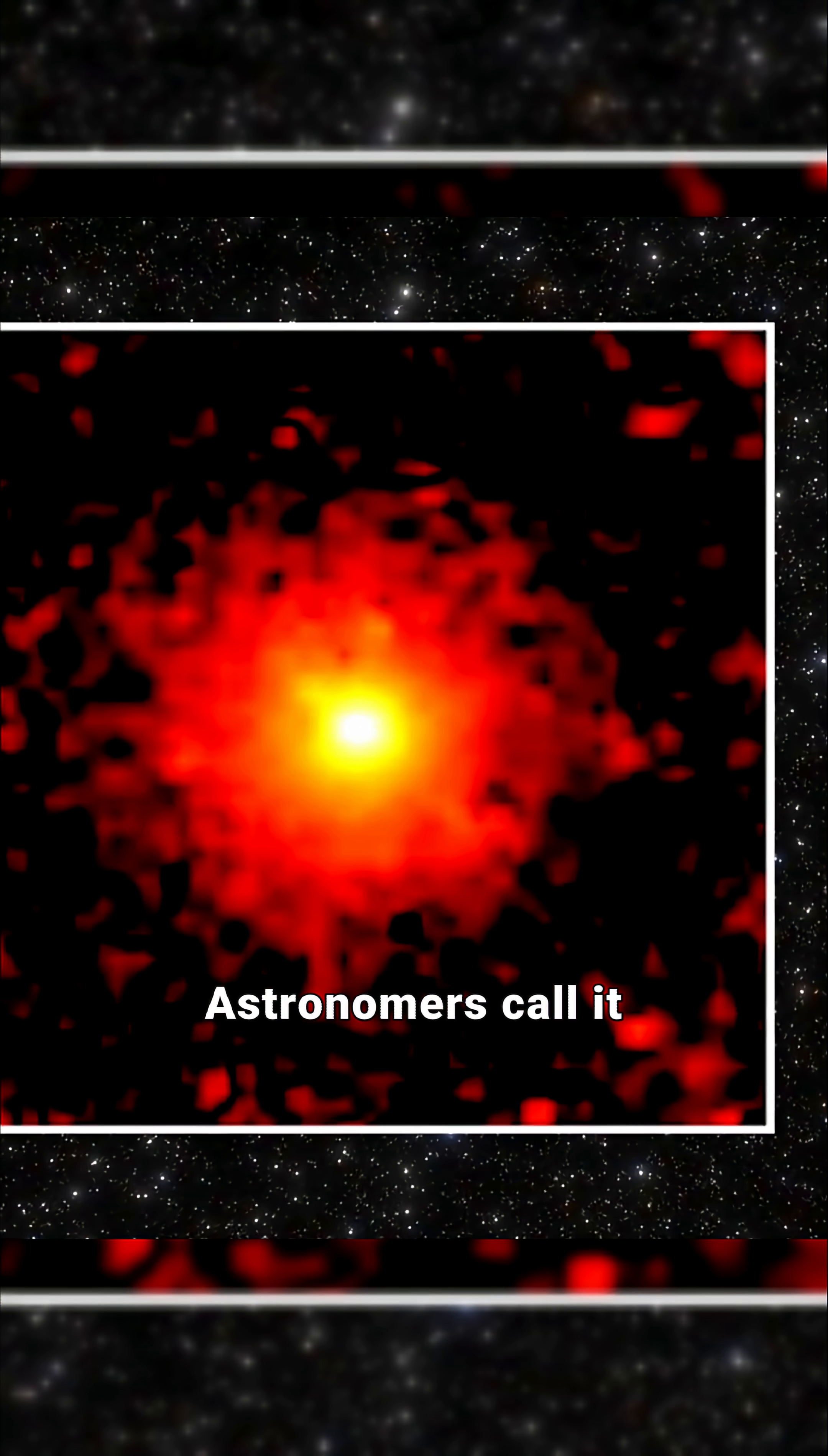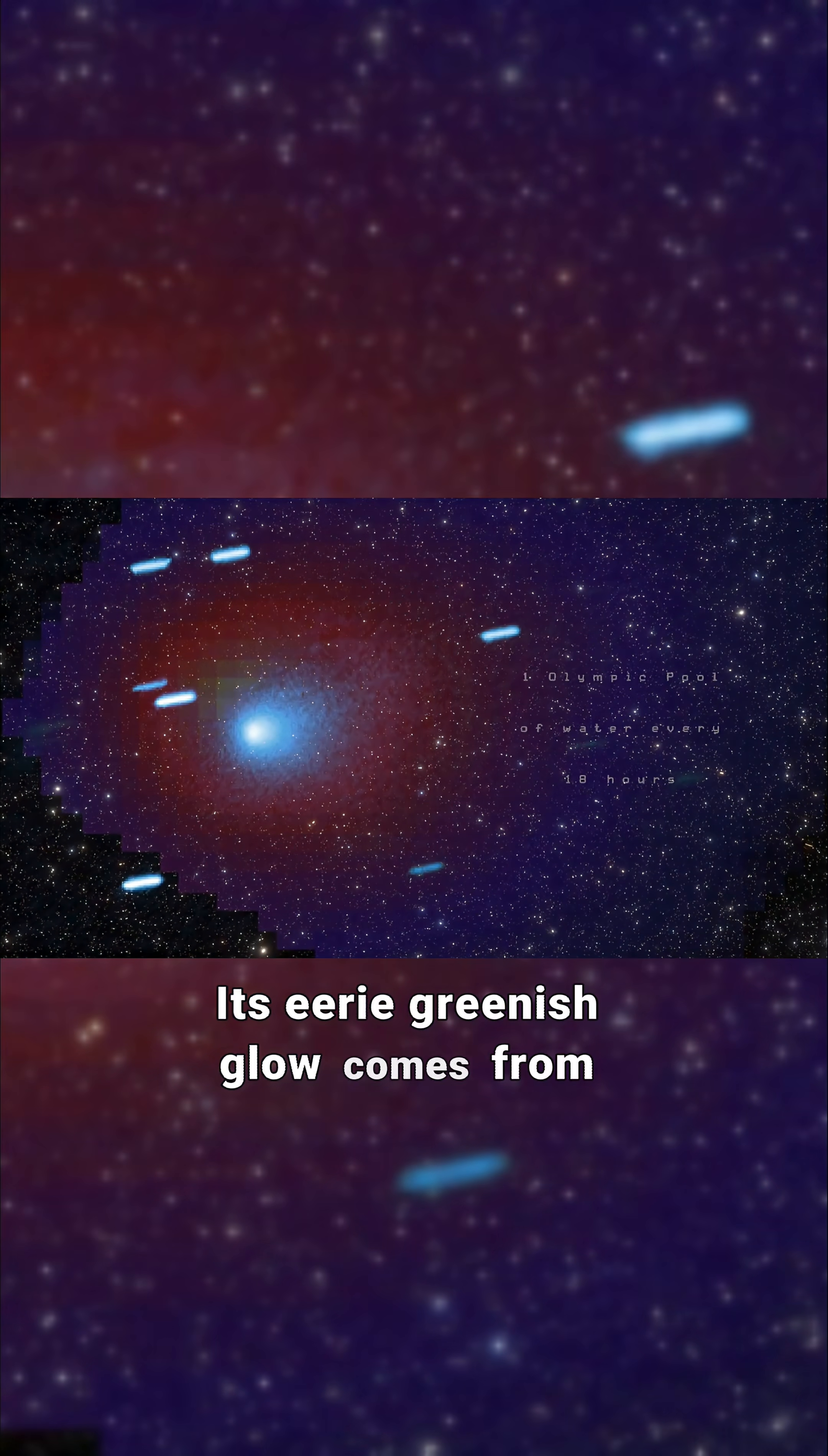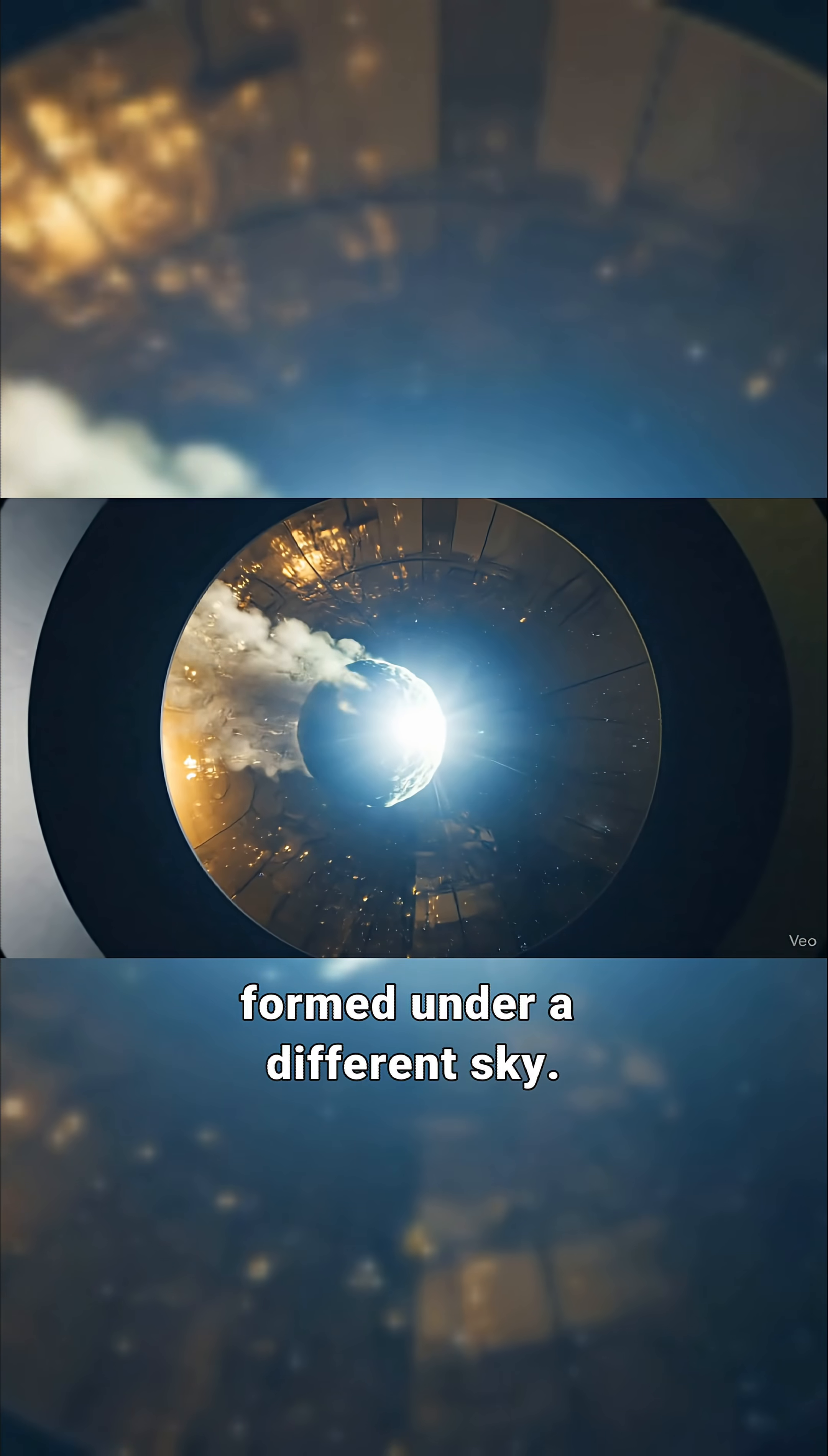Astronomers call it Alien because its chemistry doesn't match anything we've seen before. Its eerie greenish glow comes from rare gases like cyanogen and carbon, whispering clues of a world that formed under a different sky.